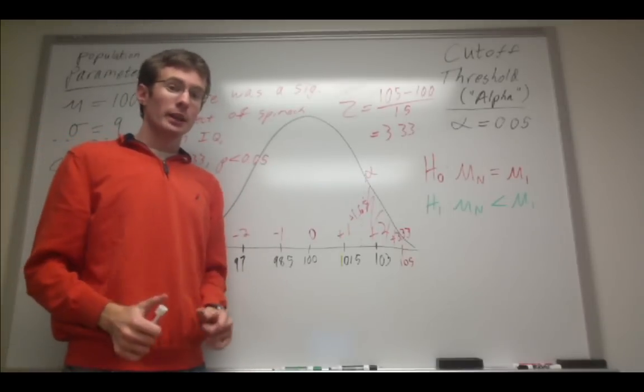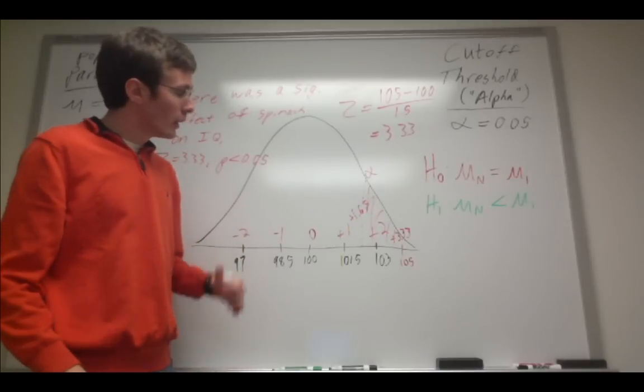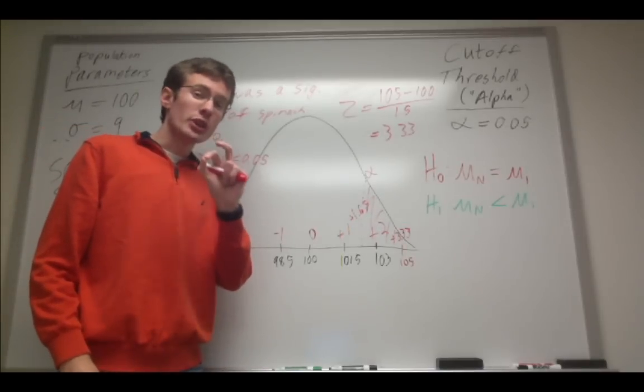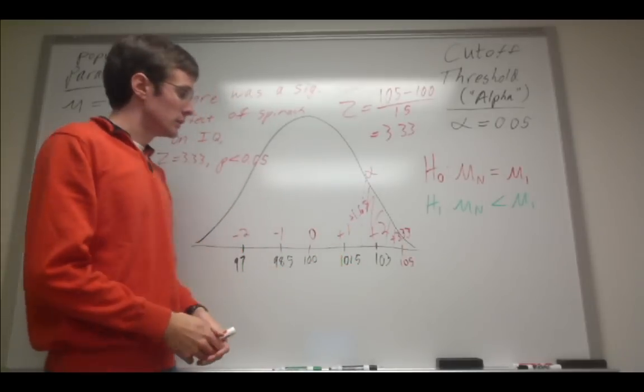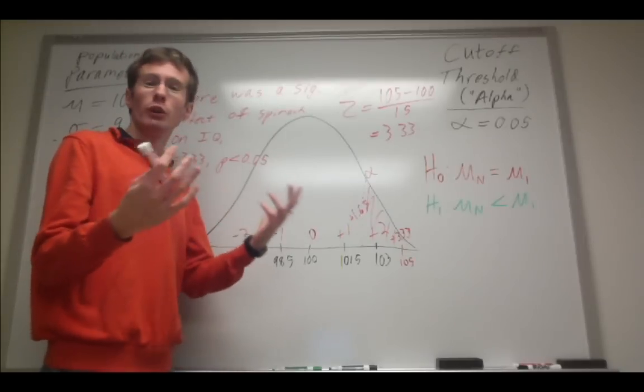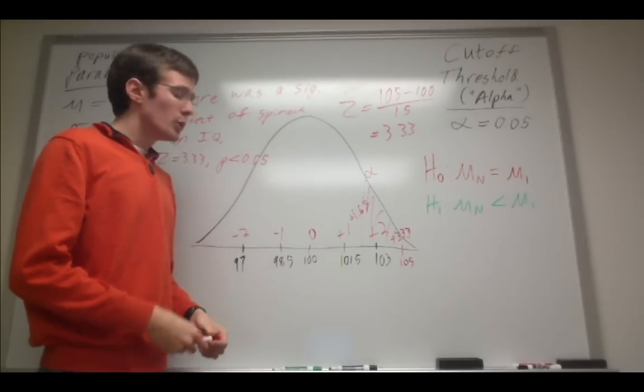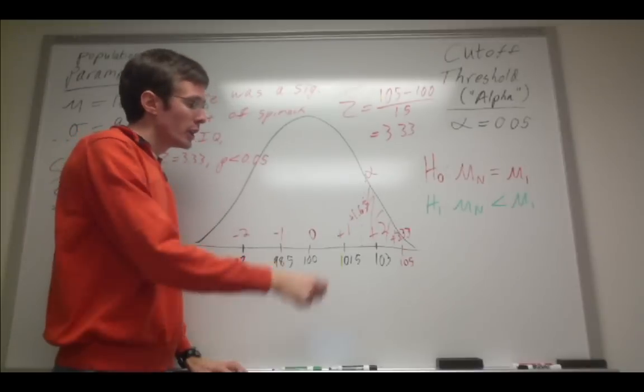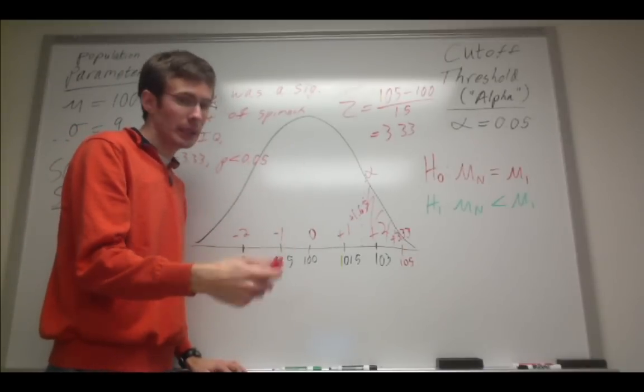There are two types of errors we can commit. There's type 1 errors and there are type 2 errors. A type 1 error is when we reject the null when the null is actually true. In which case, we've simply obtained our result due to chance. There's no real effect or significant difference going on. You can only commit type 1 errors if you're in a situation where you have rejected the null hypothesis by definition.